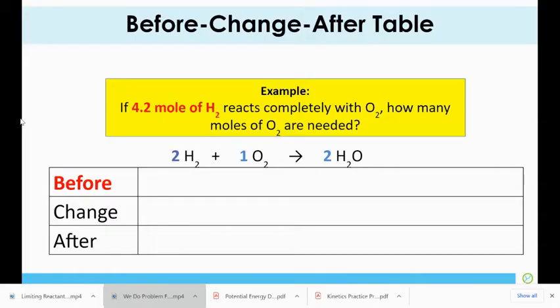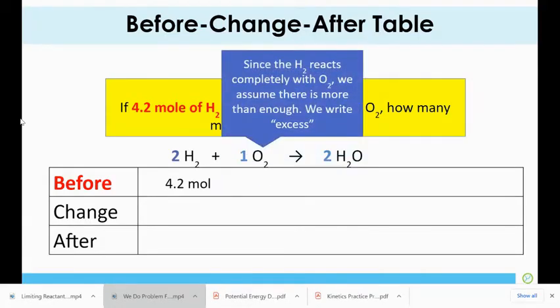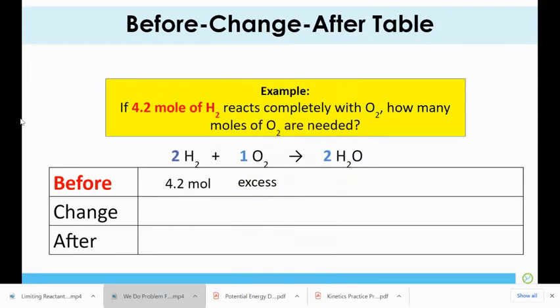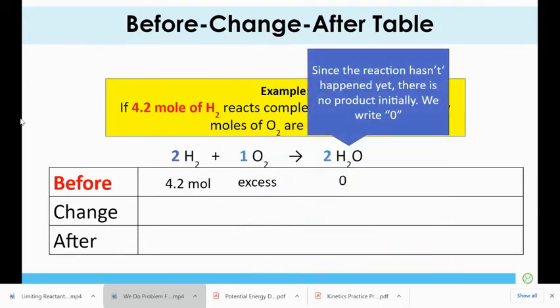Okay, so let's look again at our problem. If 4.2 moles of hydrogen reacts completely with oxygen, how many moles of O2 are needed? So we're going to always start with before. Before is nothing's happened yet. It tells us we have 4.2 moles of hydrogen. Whenever it says reacts completely with or there's excess oxygen, it'll say some sort of term that tells you we have plenty of oxygen. We write the word excess or the letters XS. And then before the reaction even happens, we don't have any products. So the products always initially get a zero.